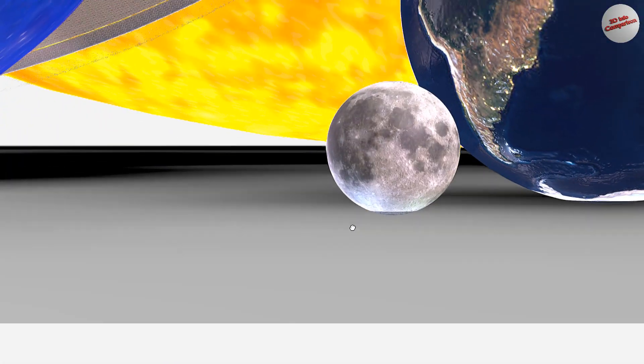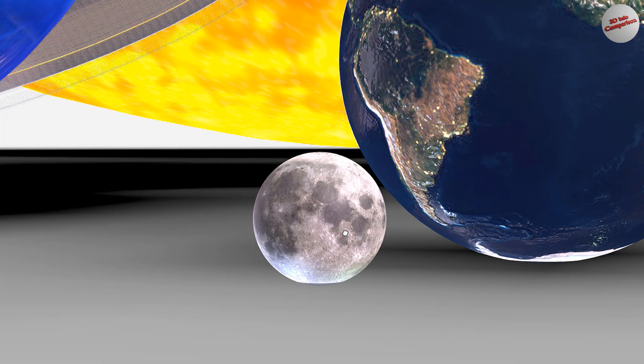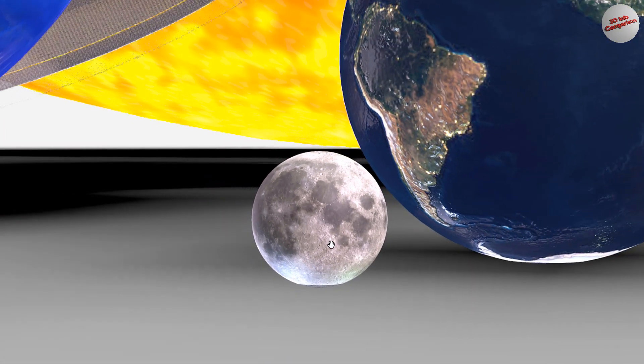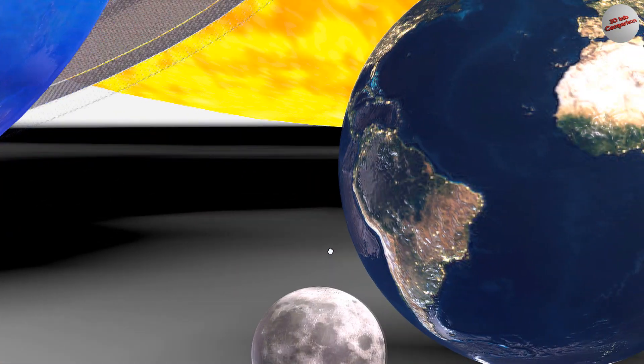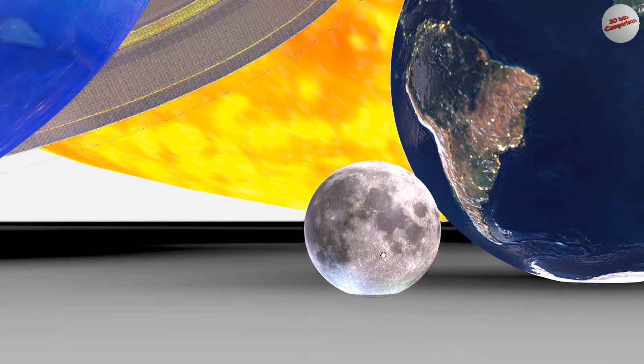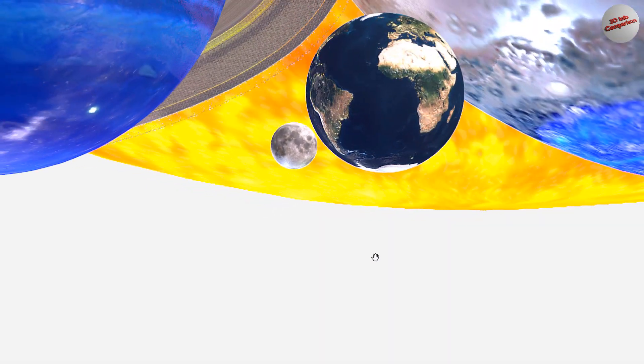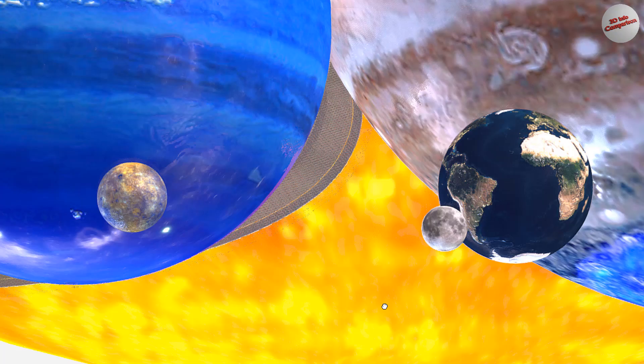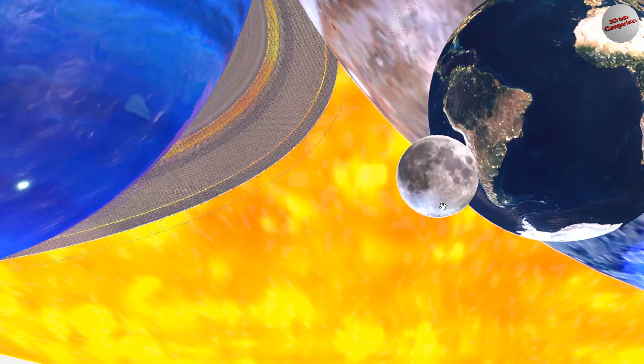The Moon is Earth's natural satellite and the fifth largest moon in our solar system. It is believed to have formed around 4.5 billion years ago, shortly after the formation of the solar system, when a Mars-sized object collided with the Earth. The Moon is approximately one-quarter the size of Earth, and is composed of rock, dust, and ice.